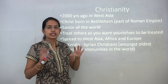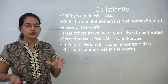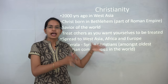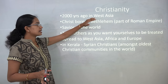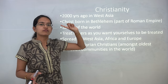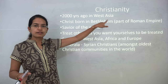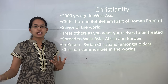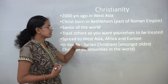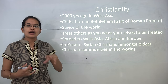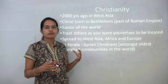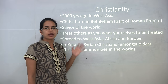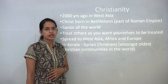As with every chapter, we look at world events during the same time. While India was witnessing the Bhakti movement, Christianity was spreading in the world. Christianity started in West Asia — Christ was born in Bethlehem, which was then part of the Roman/Byzantine Empire. He was considered the savior of the world and taught treating others as you wish to be treated. Christianity later spread to West Asia, Africa and Europe. In Kerala, Syrian Christians are among one of the oldest traditional sects of Christianity. This concludes the 10th chapter of NCERT Class 6 history.